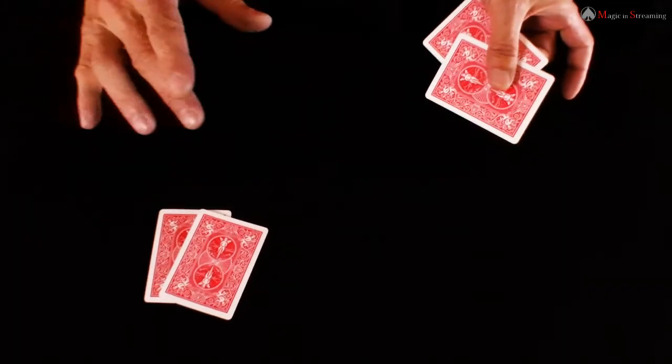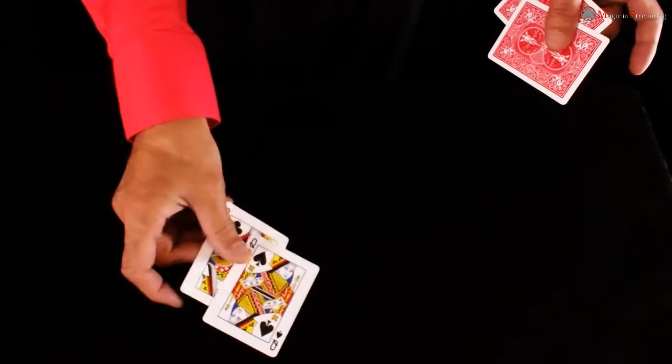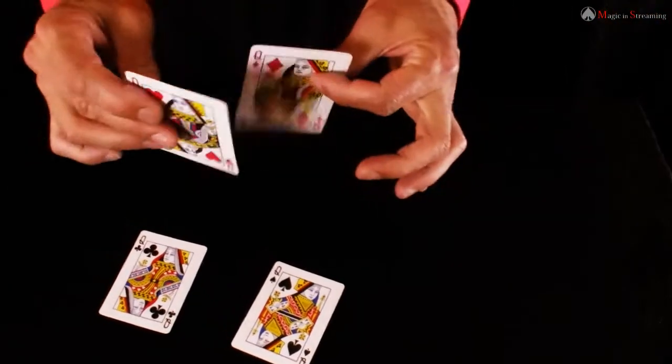Fijaros porque lo difícil vendría ahora. Bastaría hacer así, hop, hop, y en vez de las rojas me temo que están las negras. Las rojas están aquí.